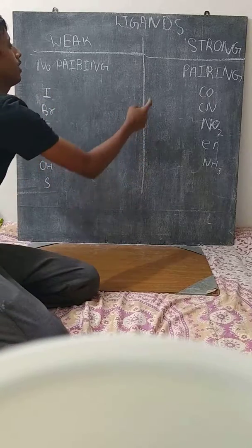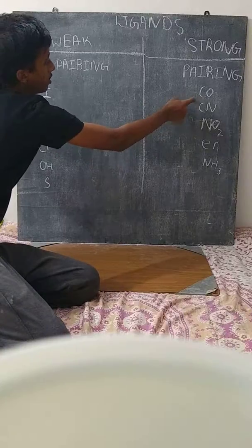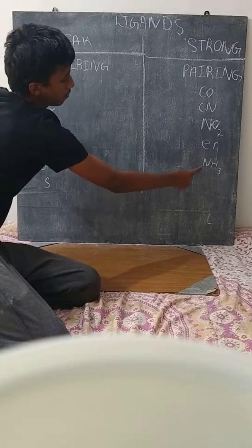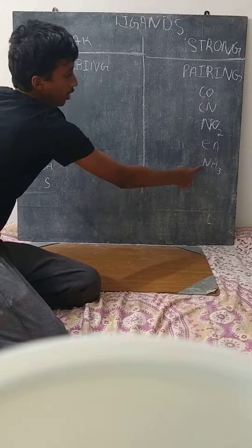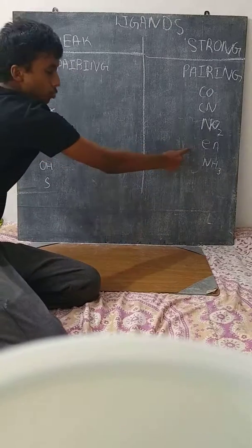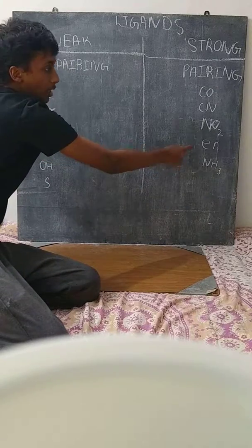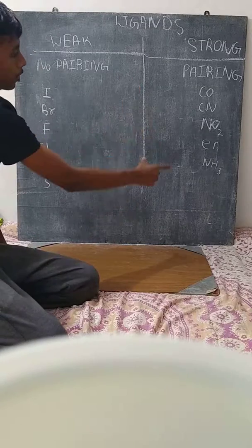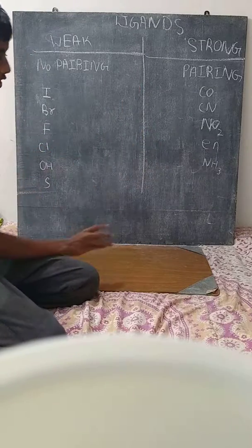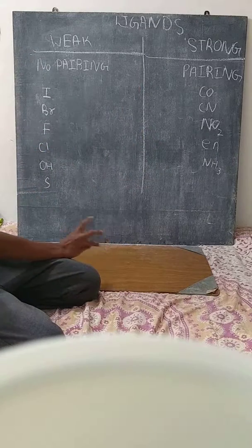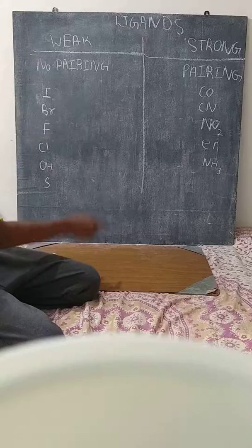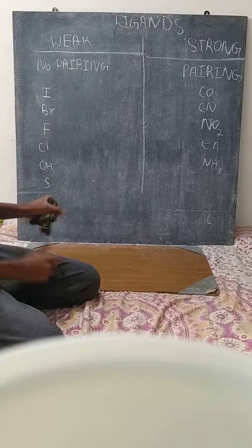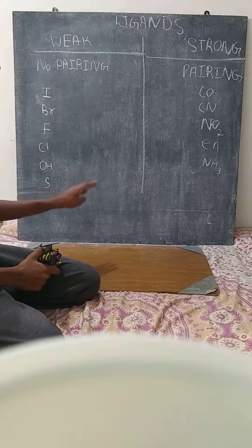So what are strong-field ligands? CO, CN, NO2, EN, and NX3. This is important — this covers the maximum number of problems you will encounter.